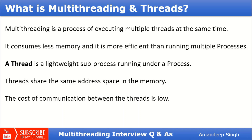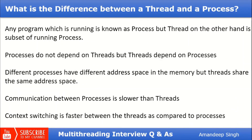The next question is: what is the difference between a thread and a process? Any program which is running is known as a process, but a thread is a subset of that running process. Processes do not depend on threads but threads depend on processes, because threads run inside processes. If a process exits, all threads inside it will also exit, but if a thread exits it does not impact the process. Different processes have different address spaces, but threads running under the same process share the same address space.